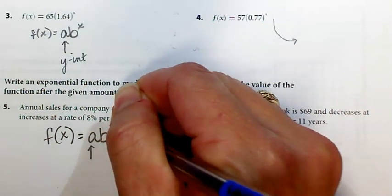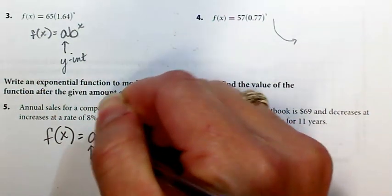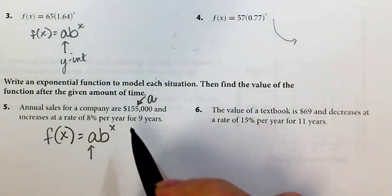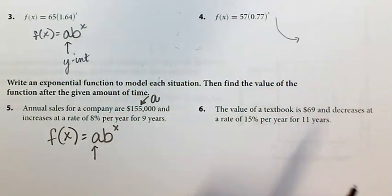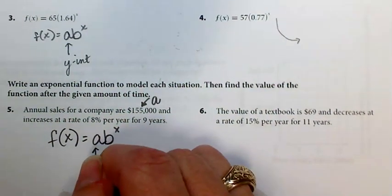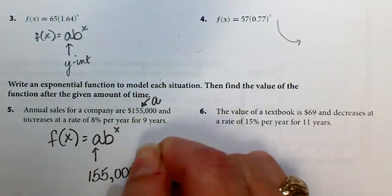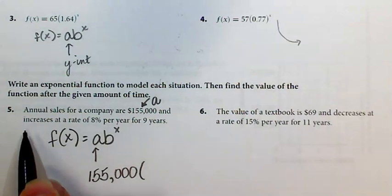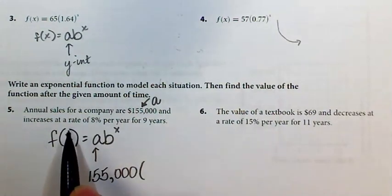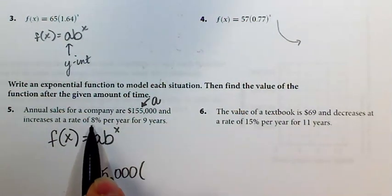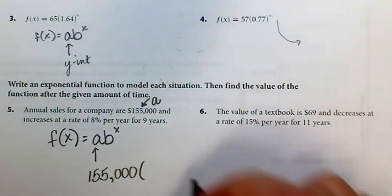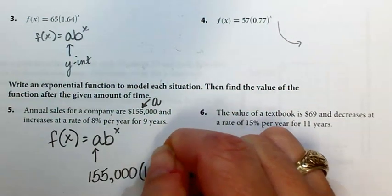b to the zero, remember that's going to be 1, and then this whole thing is just going to multiply out to be $155,000. So we've got $155,000, and then remember if it's exponential growth, we're going to take 1 and then add 0.08 for our 8%, and that's our b raised to the x.